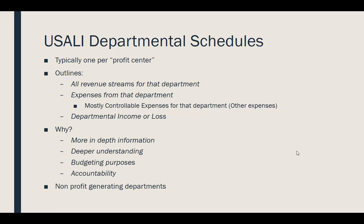We break it down this way for several reasons. It gives us more in-depth information, allowing us to break revenue down by segment for the rooms department. It also supports budgeting, since we can use that department's information to budget the following year. And it creates accountability — on a summary operating statement we only see total rooms revenue, total rooms expenses, and total food and beverage figures, so the departmental schedule gives us a deeper understanding of what's going on within each department.